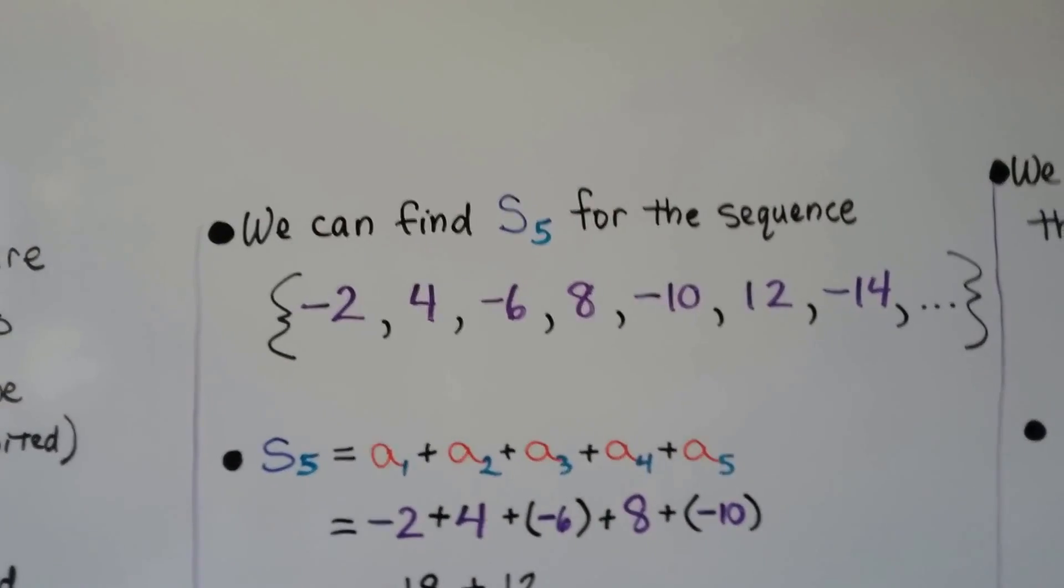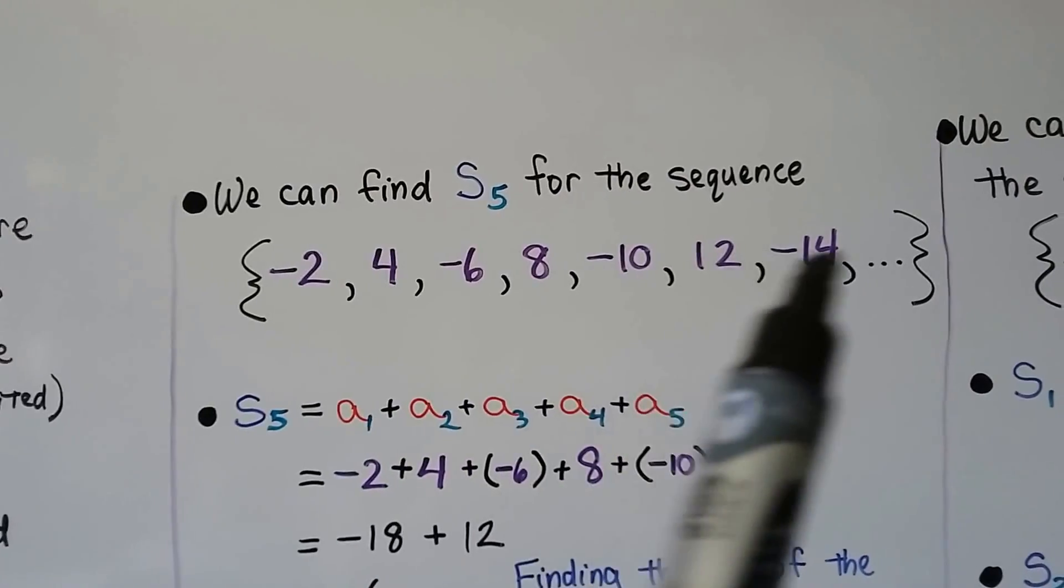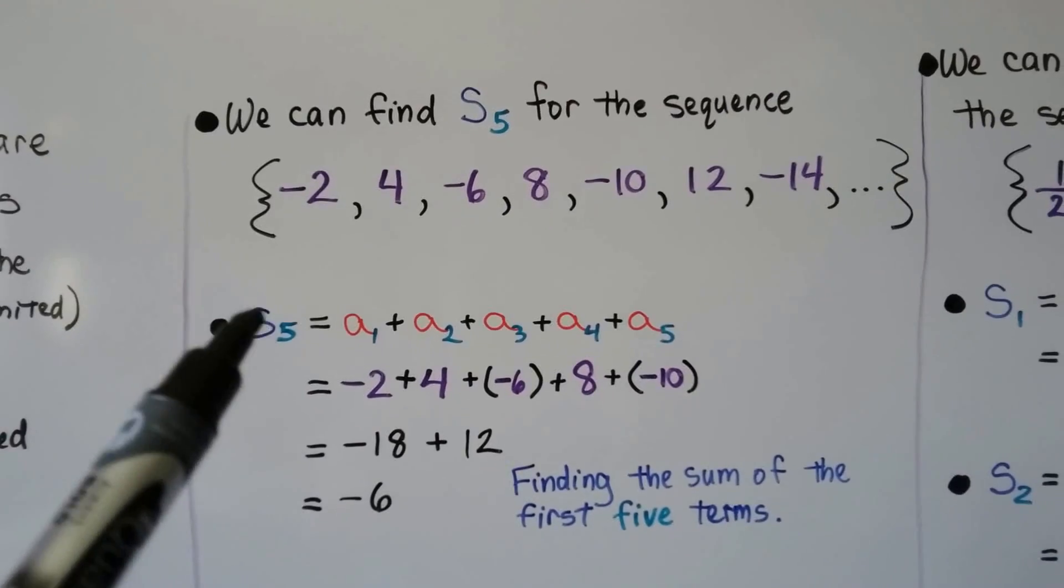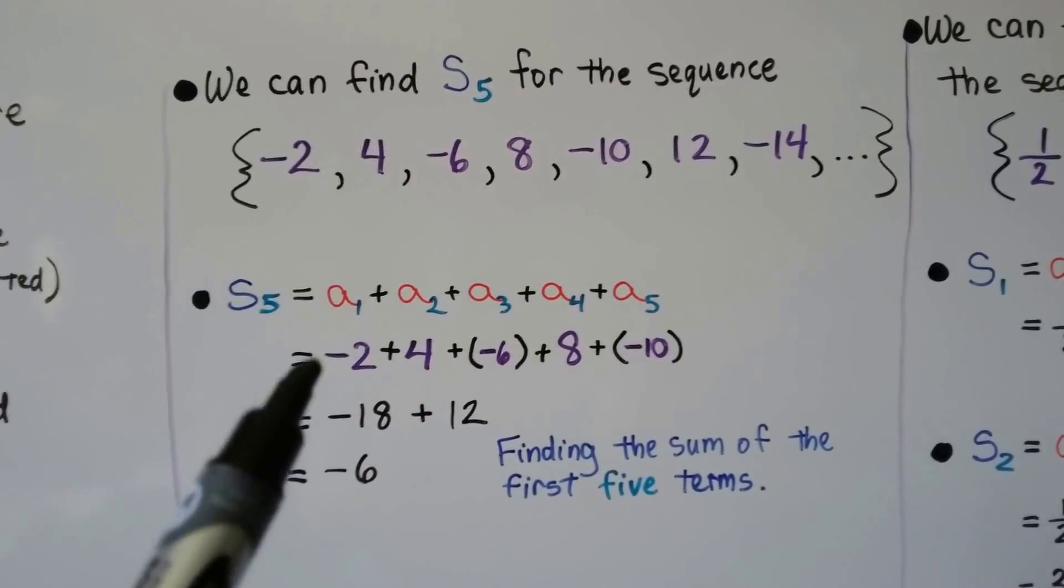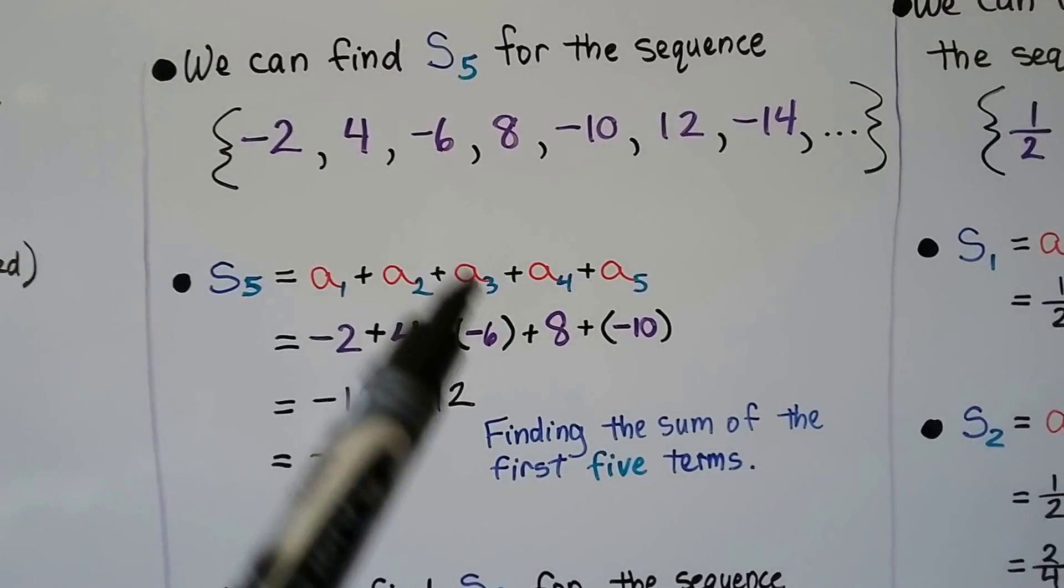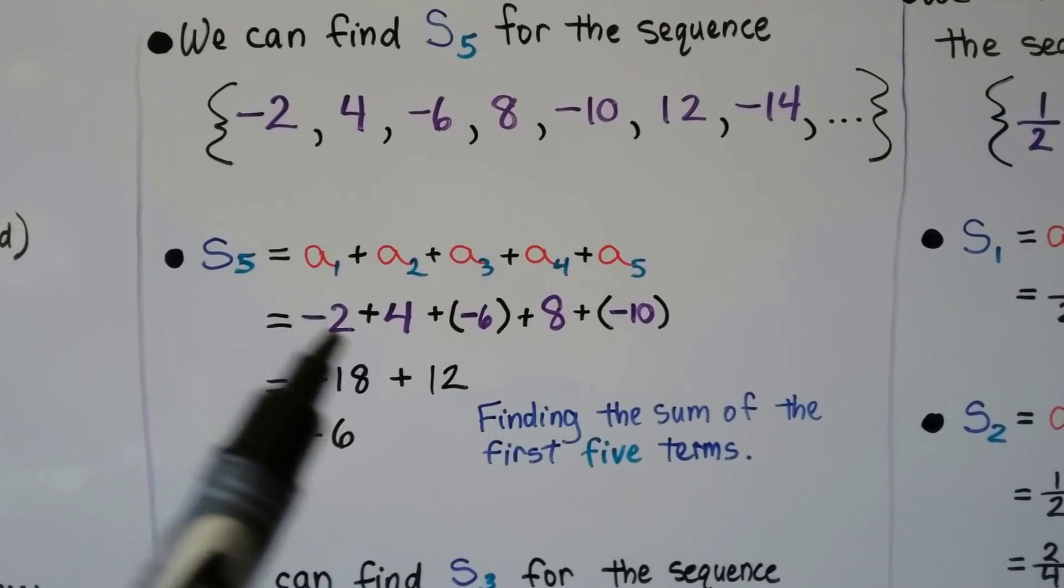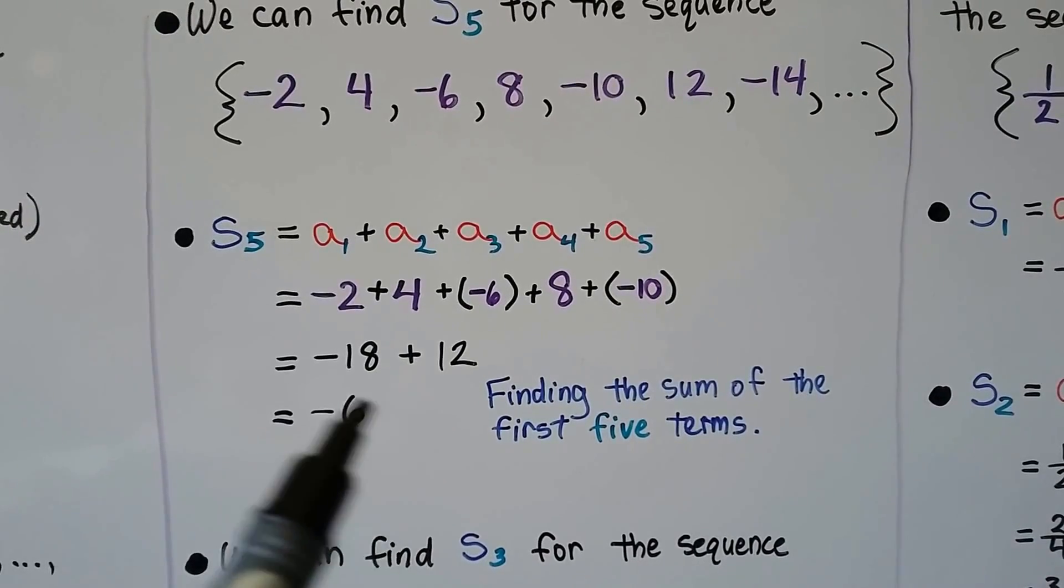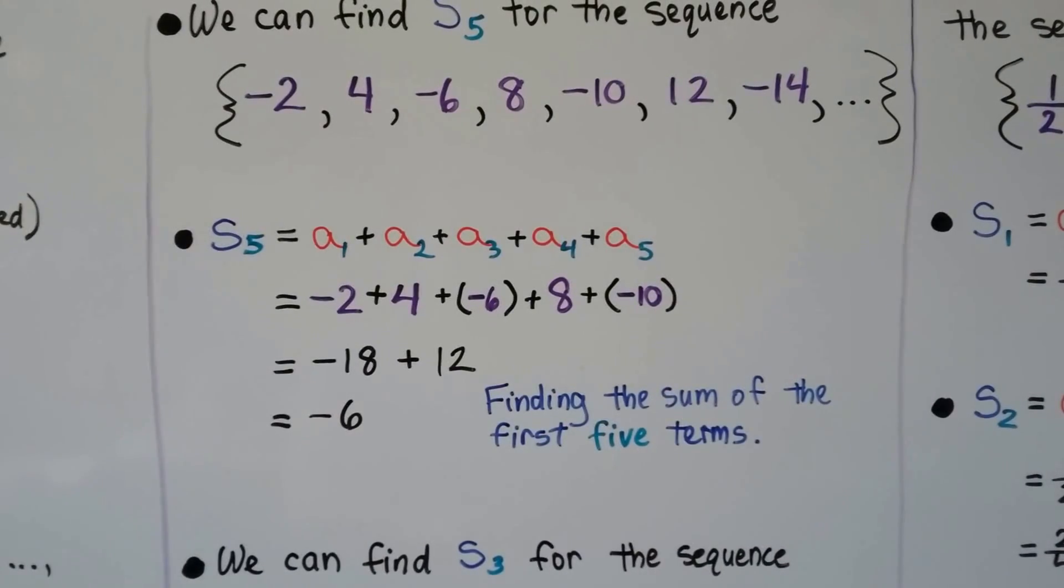We can find S_5 for this sequence. Notice that we have positives and negatives mixed together, so we have to be careful when we're adding them. We're going to find the sum of the first five terms. We have -2, 4, -6, 8, and -10. We can add the negatives together and get -18. We can add the positives together and get 12. Then we can add them and get -6. That's the sum of the first five terms.